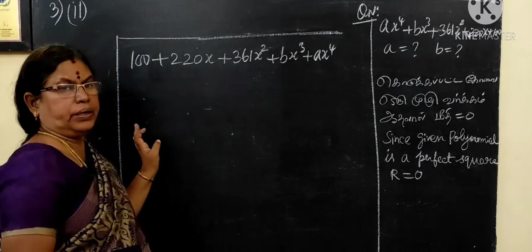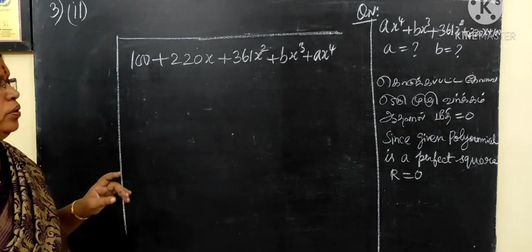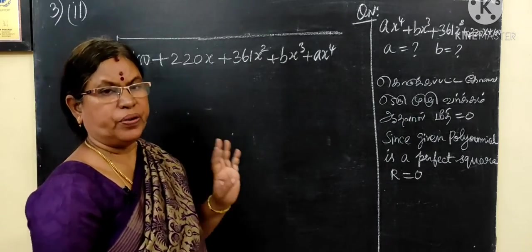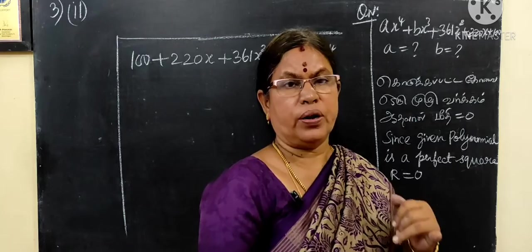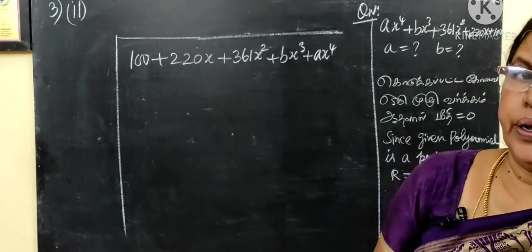So, now question number 3, subdivision 2. Given polynomial is a perfect square, you want to find the value of a and b.